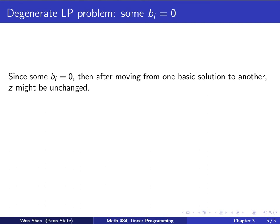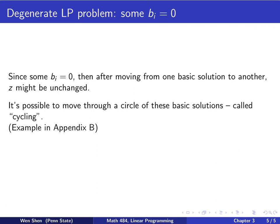Now let's have a discussion on the degenerate case, where some of the b_i's could be zero. From the previous discussion, we already know if some of the b_i is zero, then if you move from one basic solution to the other, the z value might be unchanged. Then you don't know for sure that you are actually moving to a different solution. In this case, it is possible to move through a circle of several basic solutions and get stuck there. The phenomenon is called cycling. If you're curious to see a concrete example, you can read Appendix B in your textbook where such an example is given.